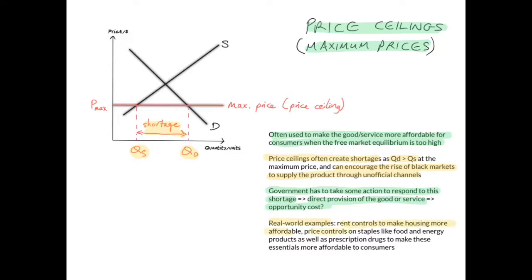Real-world examples of price ceilings include rent controls, designed to make housing more affordable, as well as price controls on staples like food, energy products, and prescription drugs. As shown in the diagram, the maximum price or price ceiling is set below equilibrium. Quantity demanded is greater than quantity supplied, leading to a shortage that the market cannot clear by itself because there is a price control set by the government.